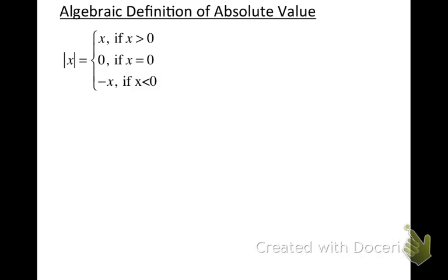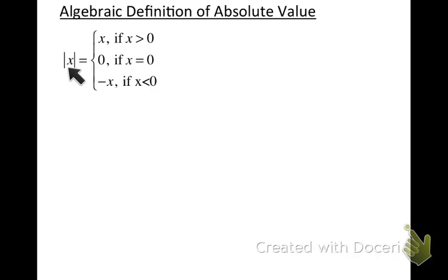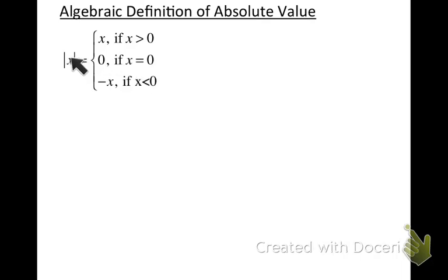What we need to start with this video is reminding you of what the algebraic definition of absolute value is. Remember that it depends on whether the number you're taking the absolute value of is positive, zero, or negative. If you're taking the absolute value of a positive number, the absolute value equals the number inside. The absolute value of zero is always zero. And if you're taking the absolute value of a negative number, the result is always the opposite of that number.